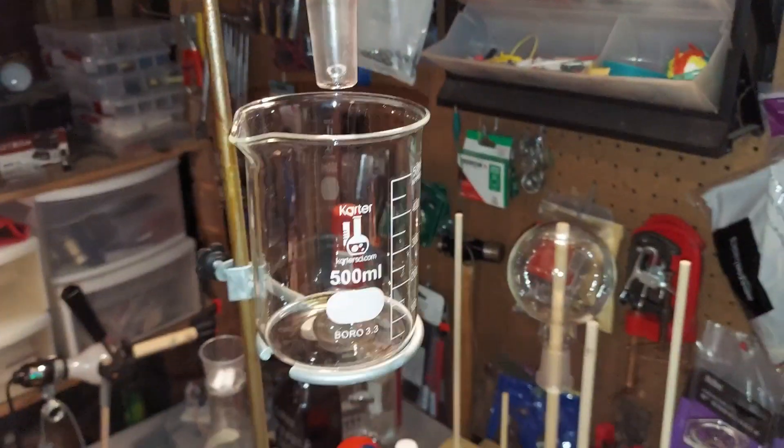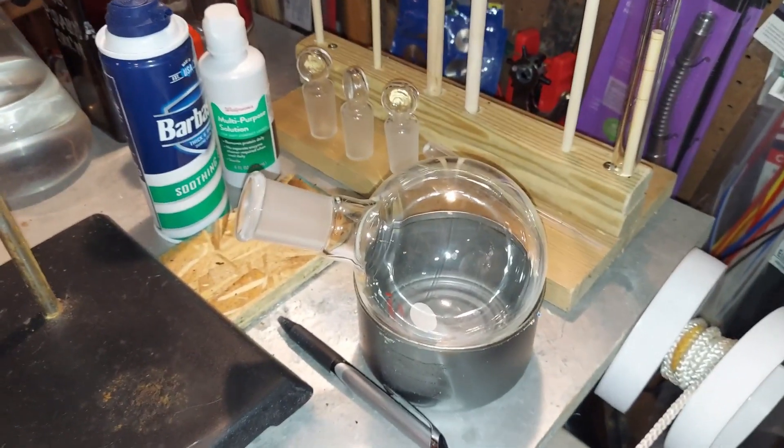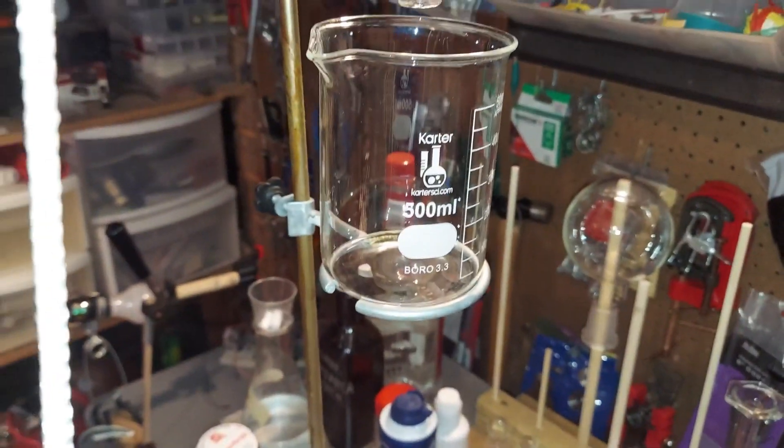Once the thermometer up here goes from 100 degrees to 120 degrees, I know I have nitric acid. I'll remove that beaker and then I know everything coming over is nitric acid, so I'll put on another container there to collect it.